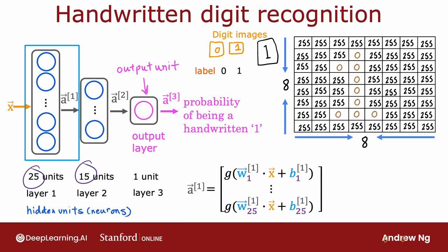Notice that a1 has 25 numbers because this hidden layer has 25 units, which is why the parameters go from w1 through w25 as well as b1 through b25. And I've written x here, but I could also have written a0 here because by convention, the activation of layer 0, that is a0, is equal to the input feature value x.